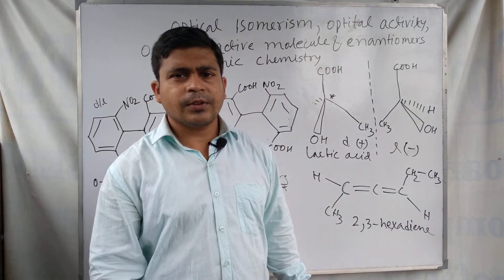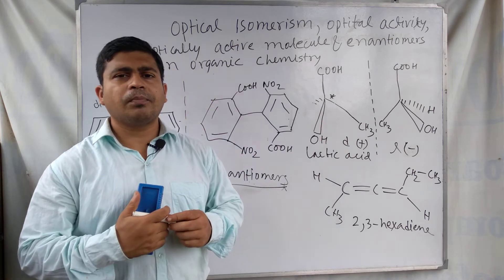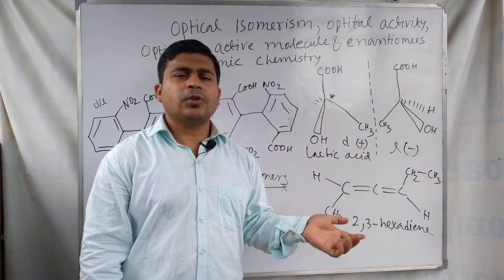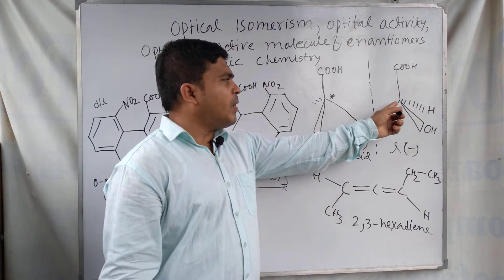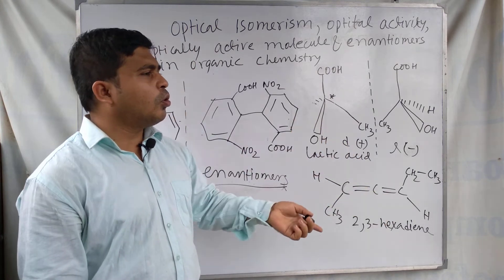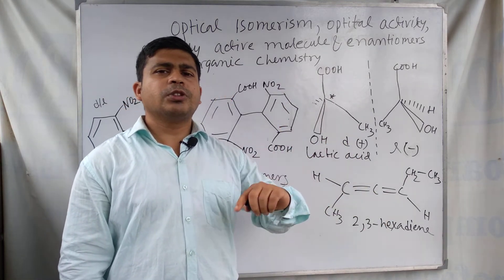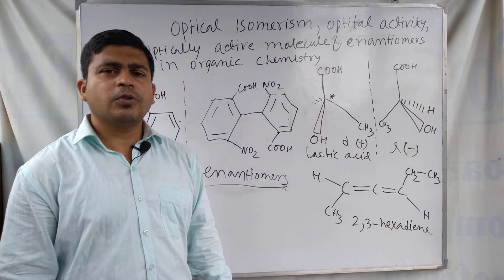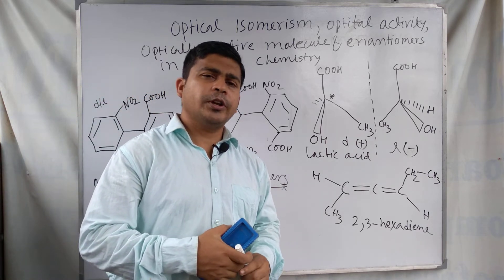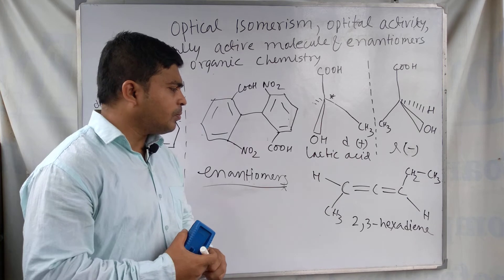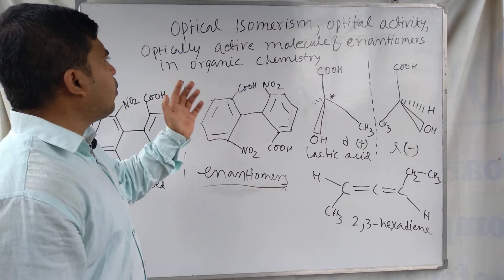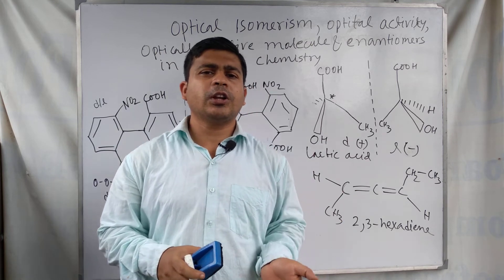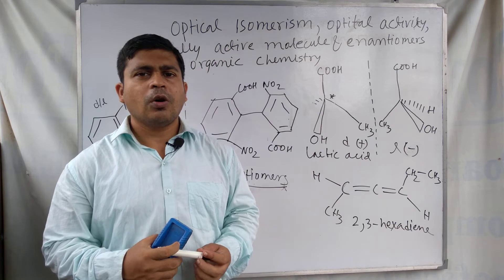In organic chemistry, molecules that have the property of turning the plane of polarized light either right or left are called optically active compounds. For optical activity, the compound must have a chiral carbon or show a non-superimposable mirror image relationship with its own image. These are examples of optically active molecules, enantiomers, and optical activity. The instrument used for measuring optical activity of organic molecules is the polarimeter.